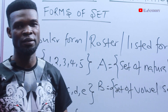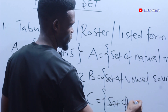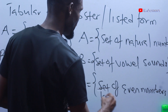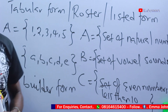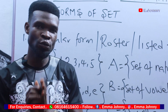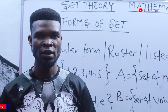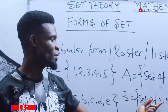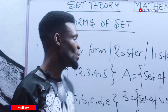When you say A is a set of natural numbers, the first question that should come to mind is: what are natural numbers? That will help you list the elements. Similarly, if C is a set of even numbers less than 10, you need to understand what even numbers are. The same applies to prime numbers, vowels, and so on.